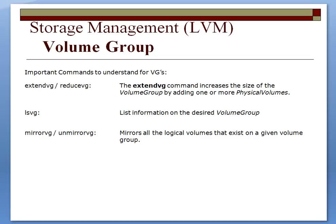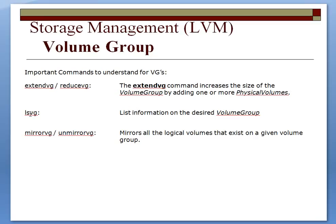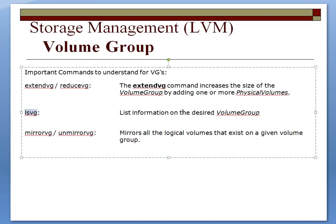Reduce VG, extend VG, LSVG, mirror VG, un-mirror VG. LSVG simply lists information on the desired VG with multiple options to view different details about that volume group. Extend VG is when you're adding a disk to the volume group. Reduce VG is the opposite — when you're removing a disk from a volume group.